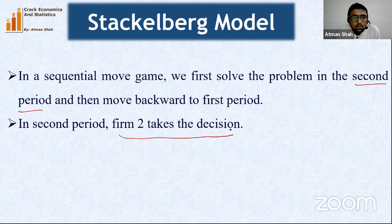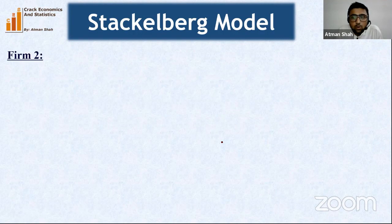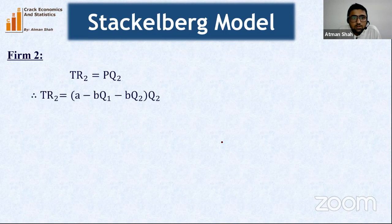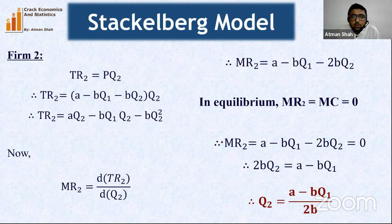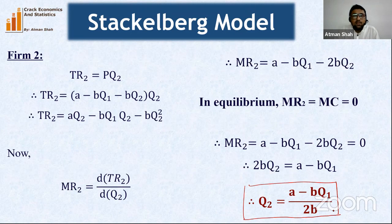In the second period, firm 2 takes the decision. We find firm 2's equilibrium first. Following the same steps as in Cournot — TR2 = PQ2, substituting P and differentiating — we get the same reaction function: Q2 = (a − bQ1) / 2b. This is the reaction curve of firm 2.